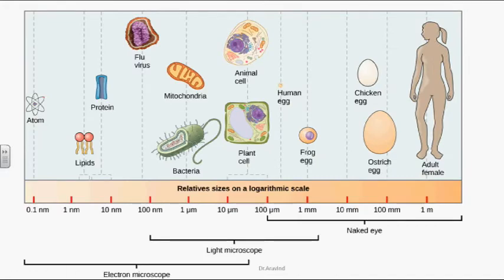Bacteria are very tiny organisms not visible to the naked eye. The bacteria's size is one micrometer, which is similar to the size of a eukaryotic mitochondria. Smaller than bacteria are viruses, and even smaller are proteins, lipids, and atoms.